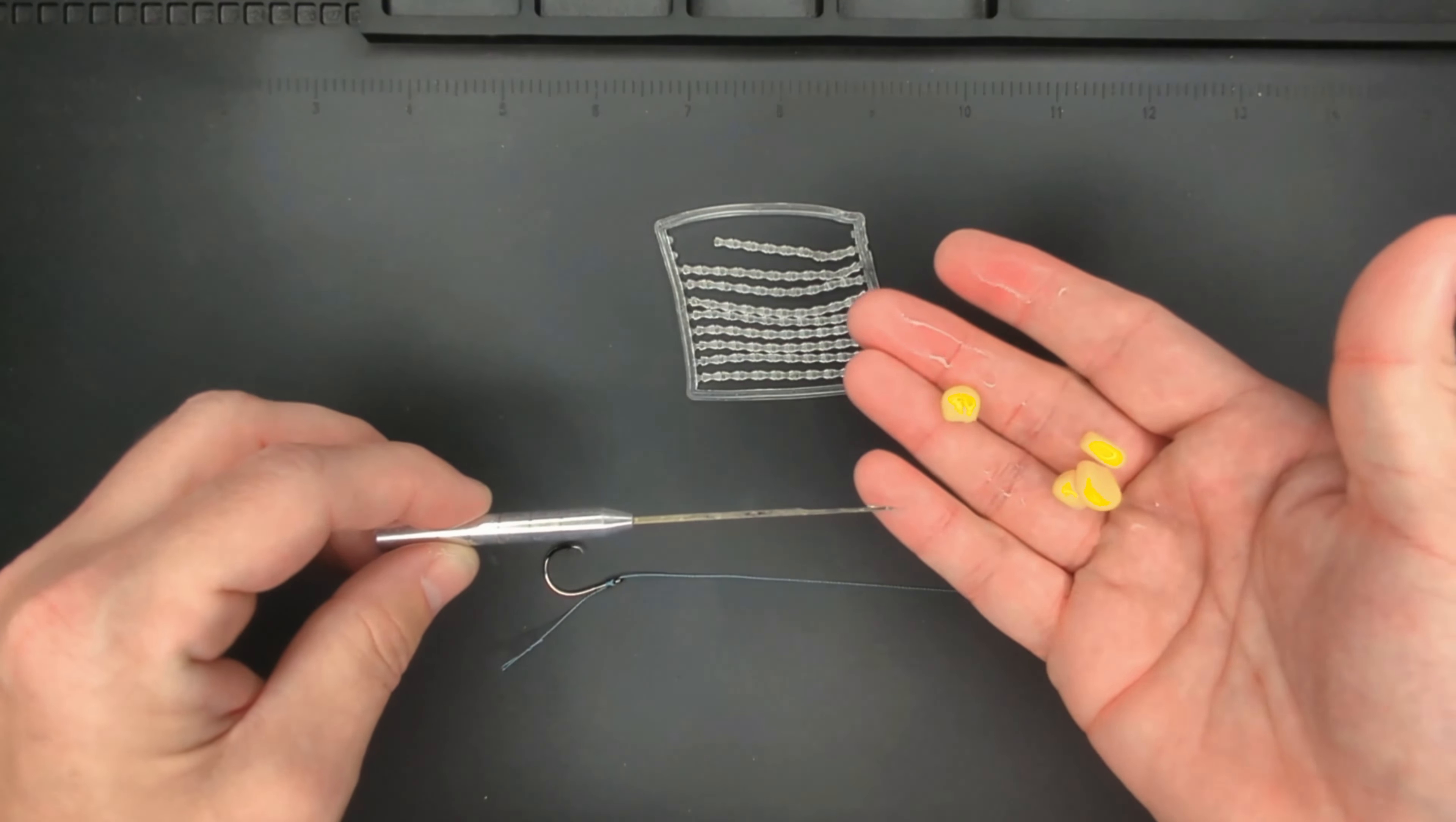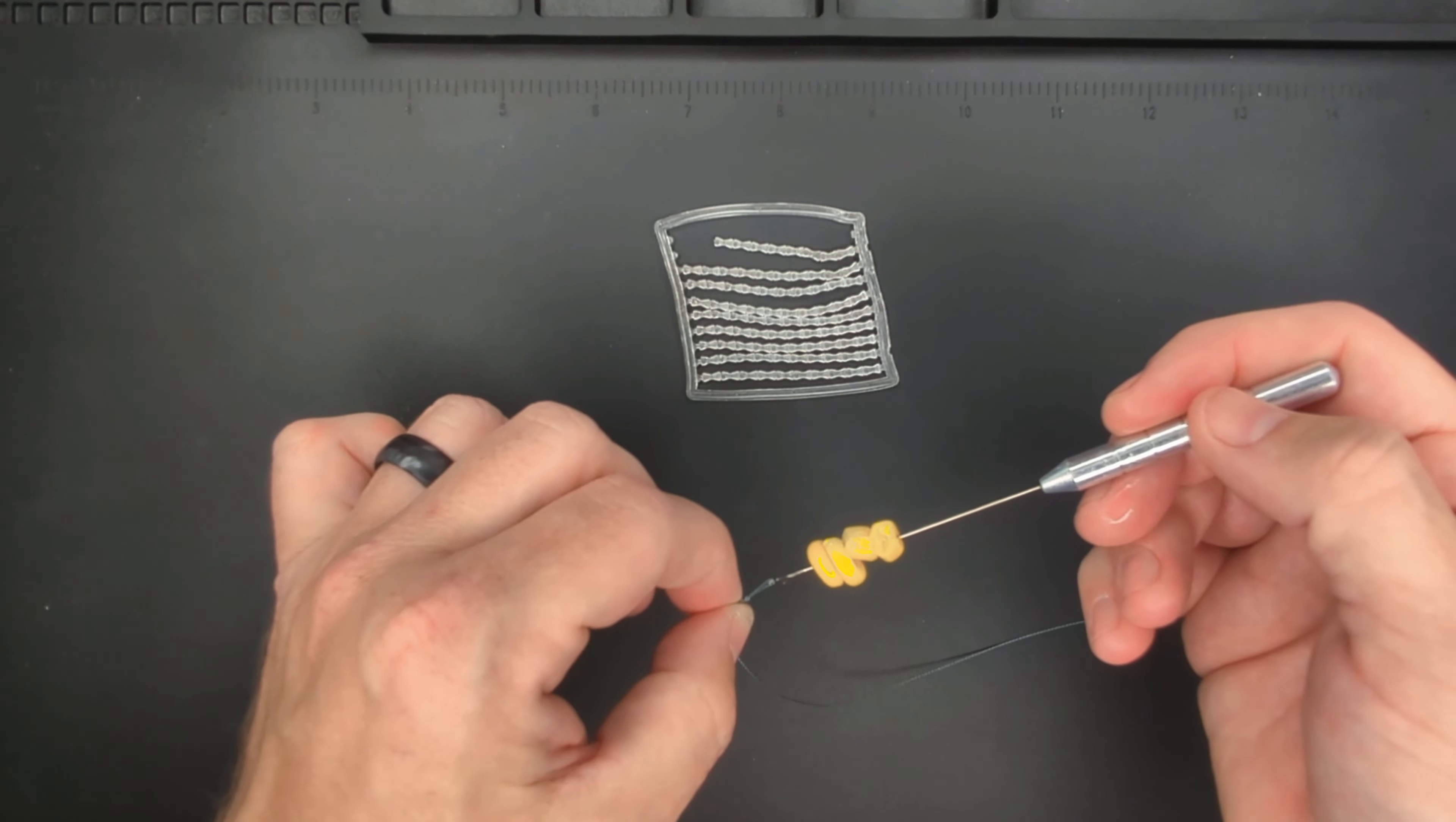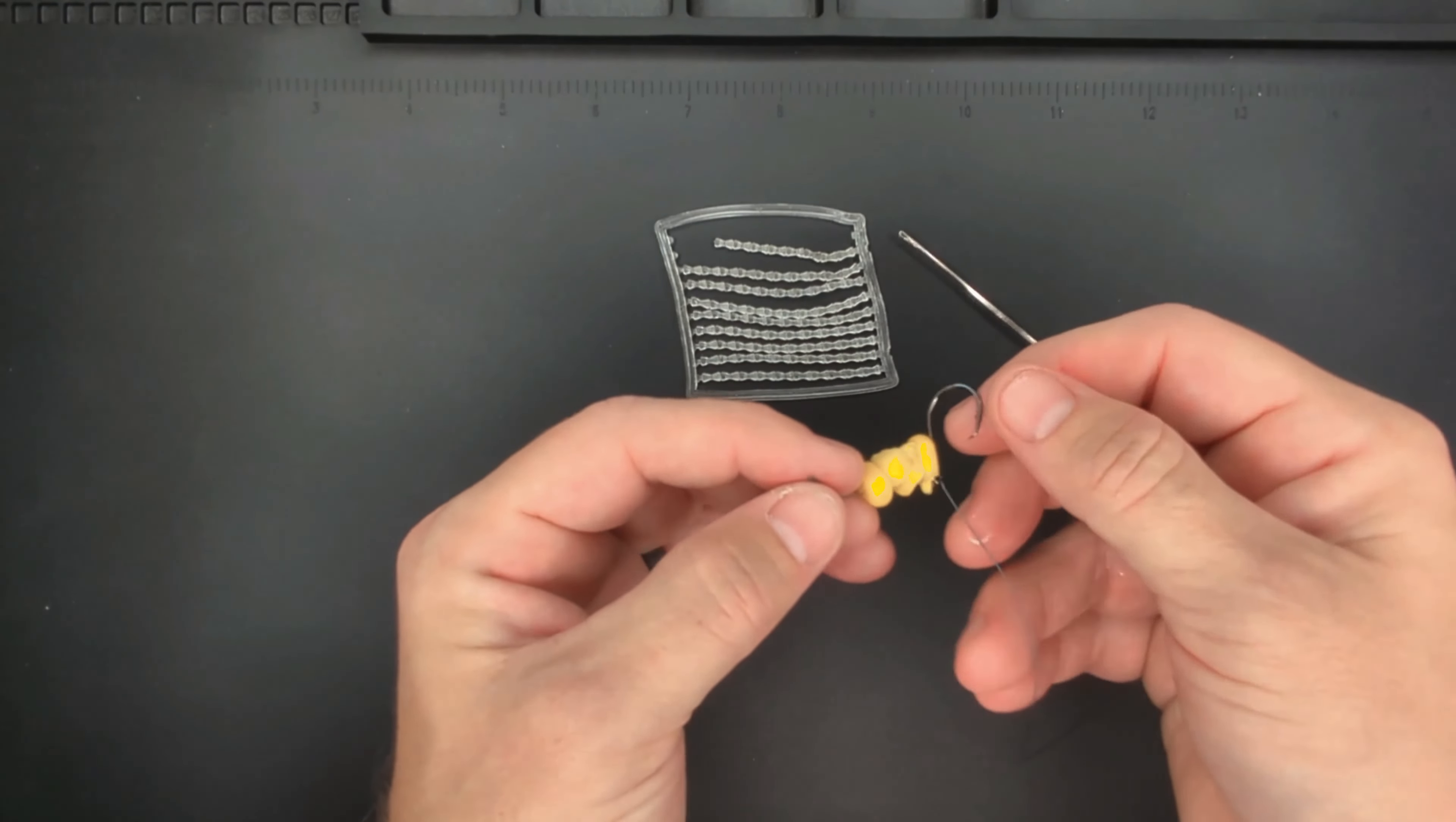You're going to take your bait needle and take some corn and thread your corn onto the bait needle like so. Take the loop and hook your bait needle onto the loop and close the stop so that it doesn't come off, and then push your bait onto the hair like so.